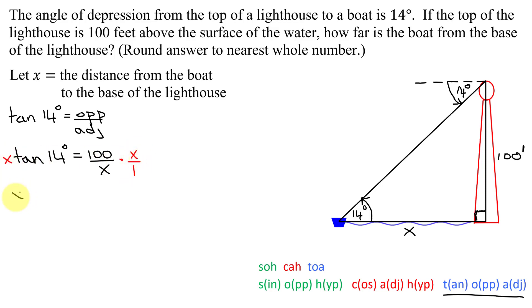And so I get X times the tangent of 14 degrees equals, these X's reduce, I just get 100. And now to get X by itself, I just have to divide both sides by the tangent of 14 degrees. These two tangent of 14 degrees reduce. I just get left with X equals 100 over the tangent of 14 degrees.